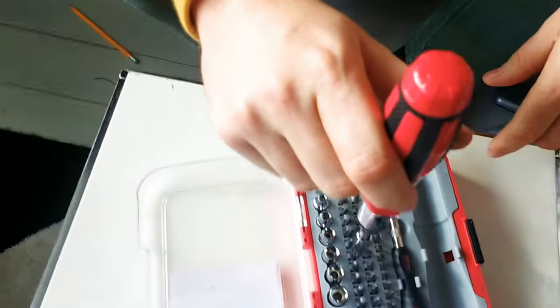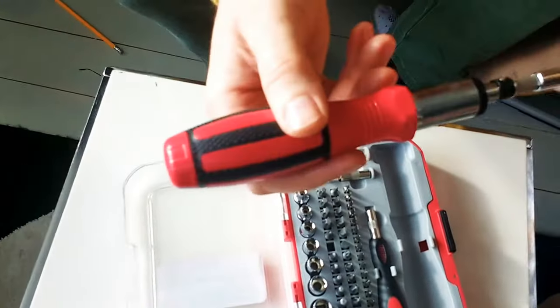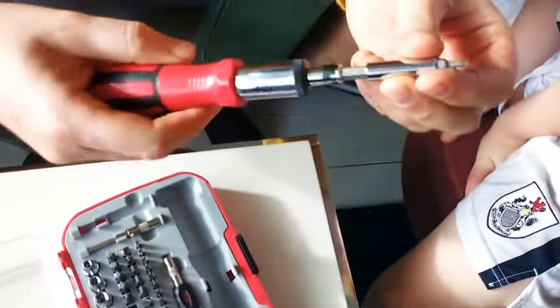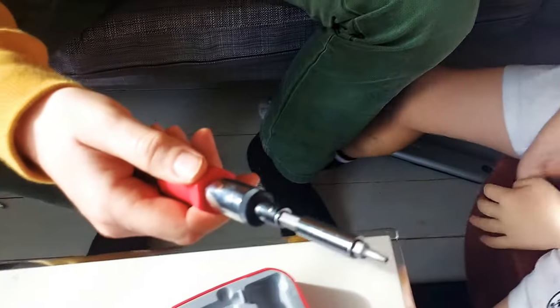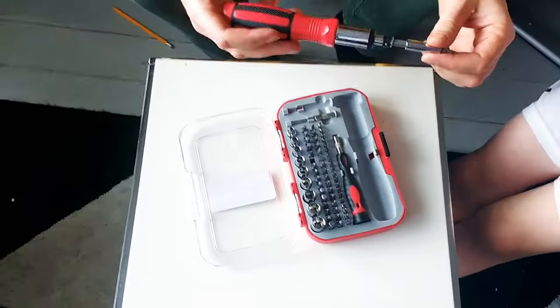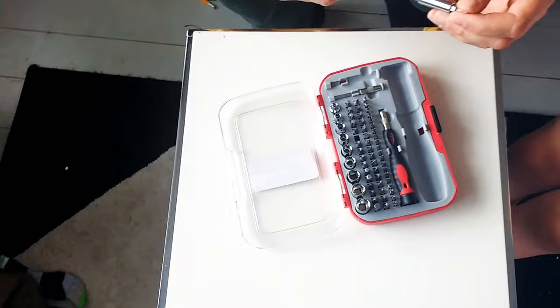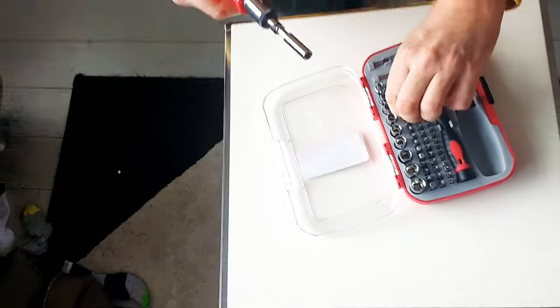And then we've got 50 bits here to pick from. Let me just put it in this magnetizer. You can see the different drill bits. There are 50 different drill bits in there.